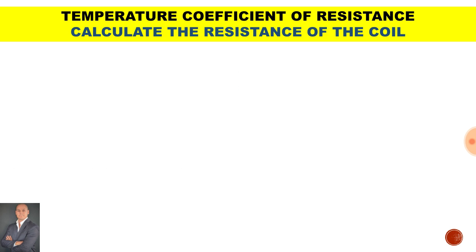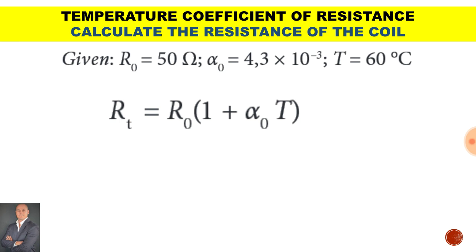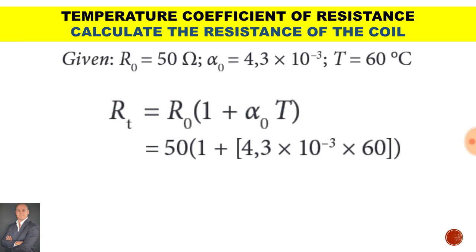To calculate the resistance of a coil using this formula: we have an original resistance of 50 ohms, a temperature coefficient of 4.3 times 10 to the minus 3, and a final temperature of 60 degrees Celsius. Substituting all these values in, we get a total resistance of 62.9 ohms.